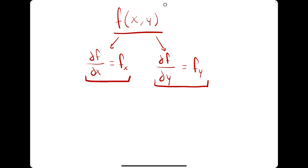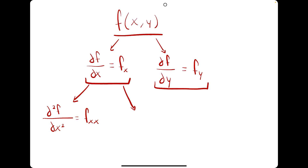Once we have these we can find the second derivative. If we take the derivative of fx with respect to x, what we'll have is d squared f over dx squared — in other words we're taking the derivative of fx with respect to x, also represented as fxx. If we take the derivative of fx with respect to y we will have d squared f over dx dy, because we already took the first derivative with respect to x and the second derivative is with respect to y. This is also represented by fxy.